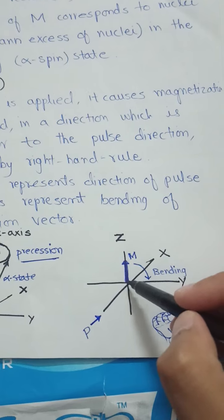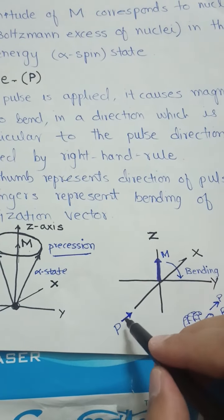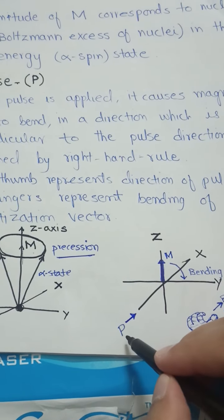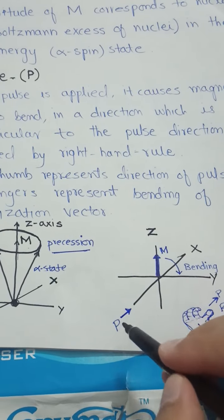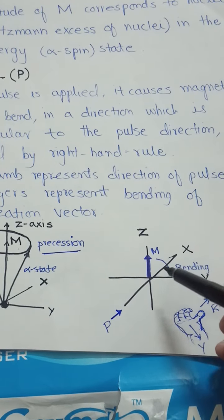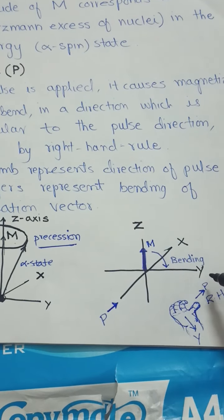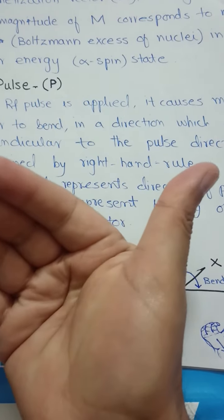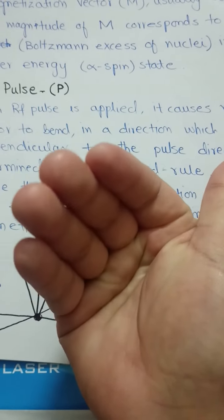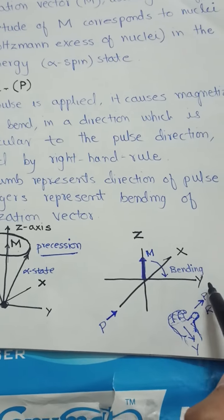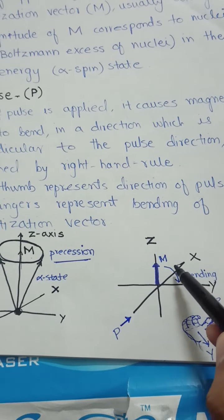The magnetization vector is present along the z-axis. When the radio frequency pulse is applied — in microseconds, which is why it is called a pulse — the pulse is applied perpendicular to the z-axis, usually along the x-axis. The magnetization vector then starts bending towards the y-axis because of the right-hand rule: if the thumb represents the direction of the RF pulse along the x-axis, the fingers represent the bending of the magnetization vector towards the y-axis.